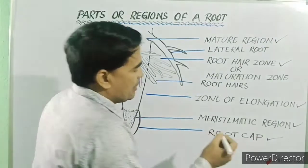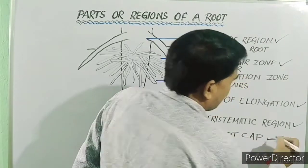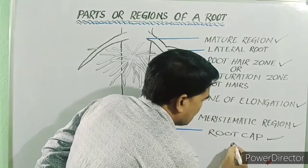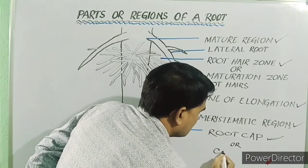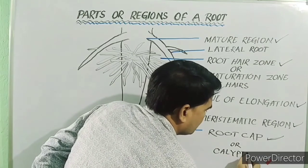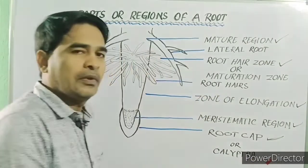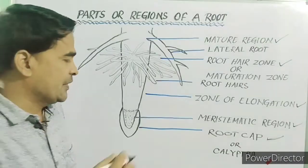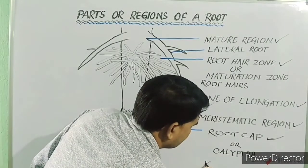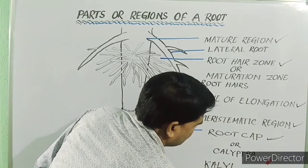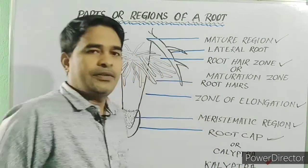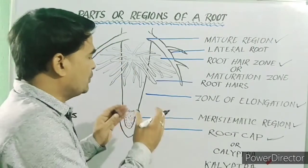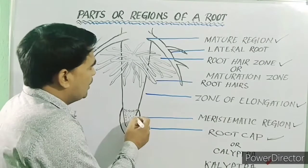First, we will study about root cap. This root cap is also called calyptra. And this term calyptra is derived from a Greek word calyptra, which means covering. So, this root cap acts as a cover around the root tip.